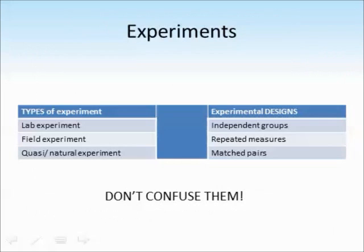This tutorial will cover the types of experiments such as lab, field and quasi experiments, and also different ways that we can design experiments, which include independent groups, repeated measures and matched pairs. It's really important that you don't confuse a type of experiment with an experimental design, and we'll talk about what each of these means as we go through.